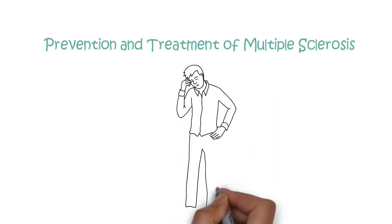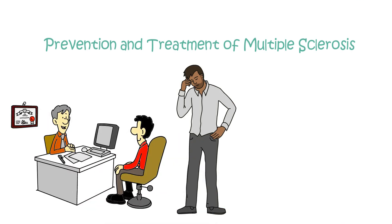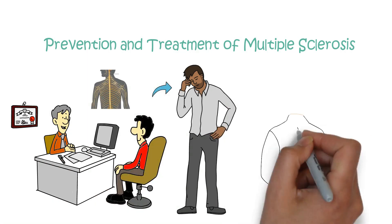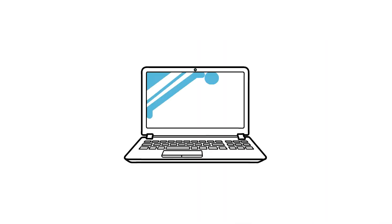Prevention and treatment of multiple sclerosis. It is unfortunate that multiple sclerosis has no cure at the moment. However, there are a number of treatments and therapies available that can help to manage the symptoms and slow the progression of the disease. Treatments are initiated and closely monitored by your doctor and specialists. Treatments fall into four categories.